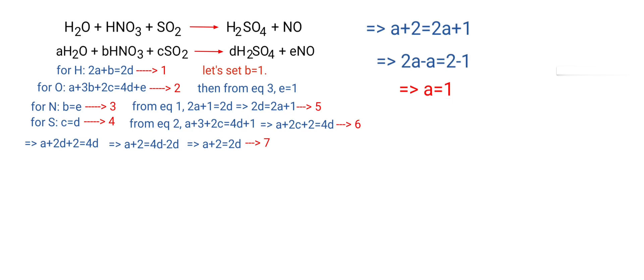Now you can apply the A value in equation 7. Then 1 plus 2 is equal to 2D. So 2D is equal to 3. Then D is equal to 3 by 2. Then from equation 4, C is equal to 3 by 2.